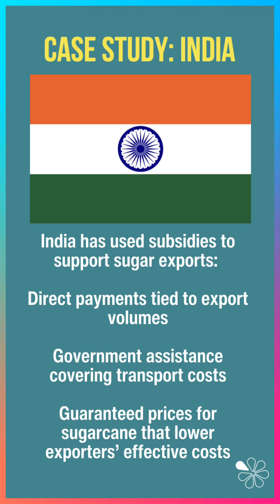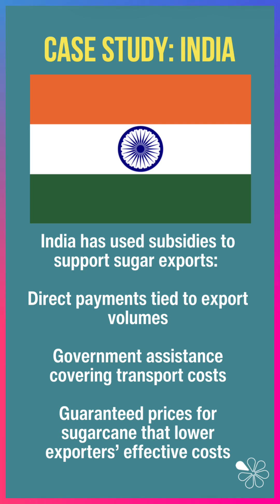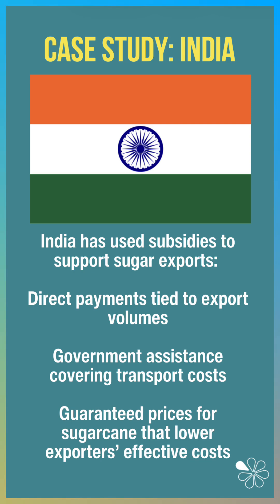India has used subsidies to support their sugar sector, including direct payments tied to export volumes, government assistance covering transport costs and guaranteed market prices for sugarcane that lower exporters' effective costs.